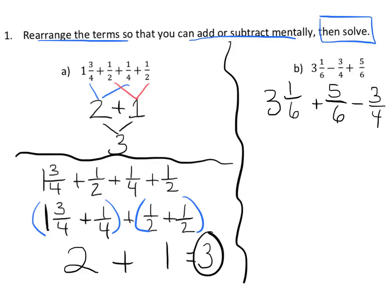This says start with 3 and 1 6th. This says take away 3 4ths, so that's over here. And this says add 5 6ths. So a lot of students are going to want to leave the minus sign and the plus sign stationary and then move just the numbers.